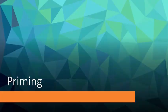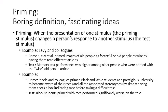Next we talk about priming as another example of implicit memory. The definition in your book sounds dry, but the ideas are really fascinating. Priming is defined as when the presentation of one stimulus — the priming stimulus — changes a person's response to another stimulus, the test stimulus.